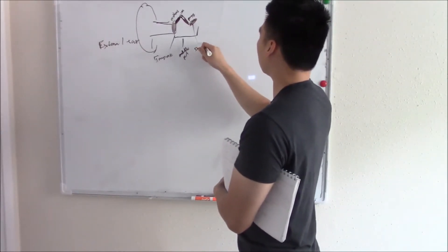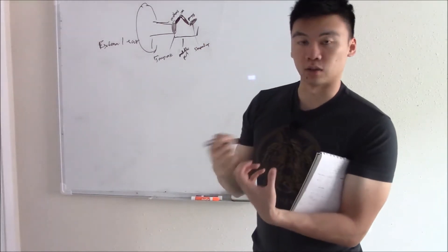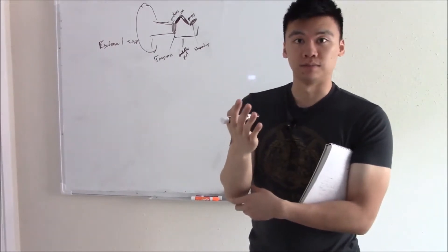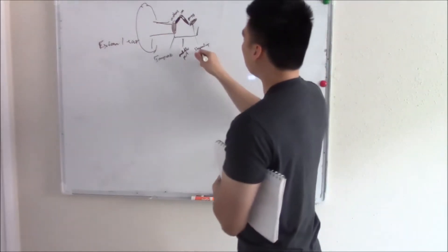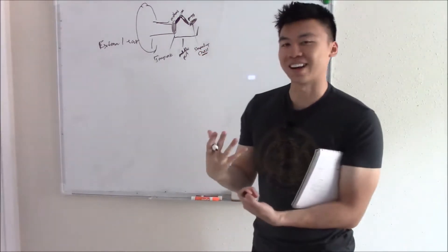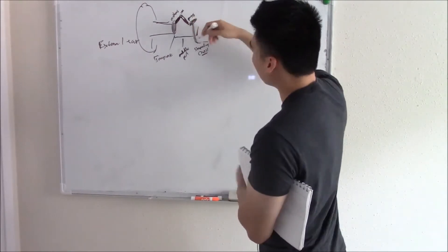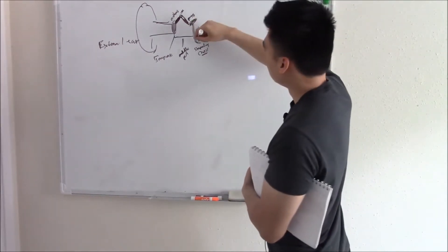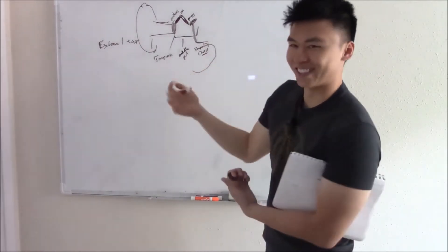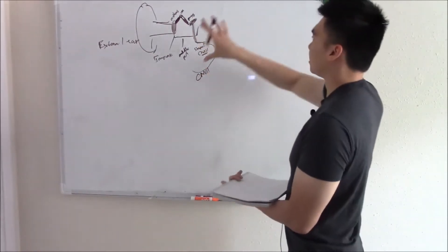What did the stapedius muscle do? It dampened the stapes, stopped it from over firing or hitting too hard. And what nerve innervated the stapedius muscle? Cranial nerve seven. Things are coming back, right? Hopefully things are coming back. So there's a muscle that sticks on here and cranial nerve seven will take it and transport it where it needs to go. That is the middle ear.